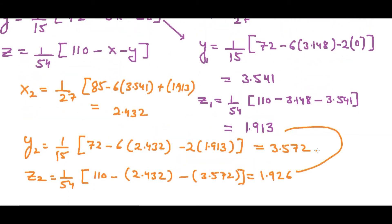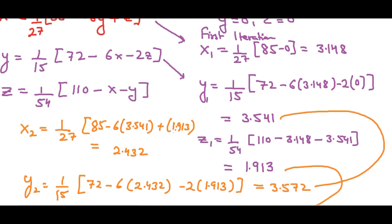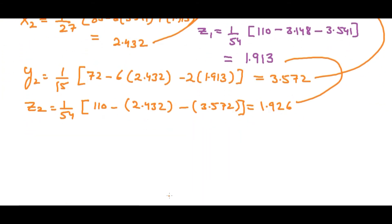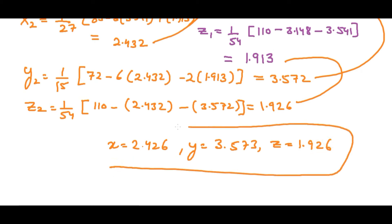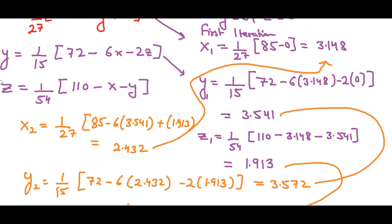You can see the values are already very close to convergence. After continuing to the fourth or fifth iteration, we reach x ≈ 2.426, y ≈ 3.0, and z converges quite accurately. The method converges very fast, as you can see z is accurate early on and x and y follow closely.